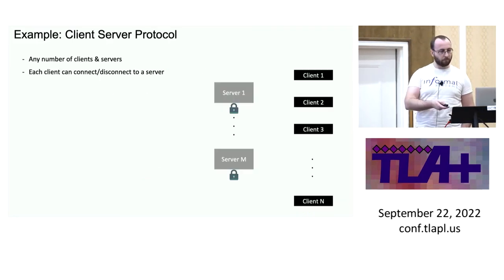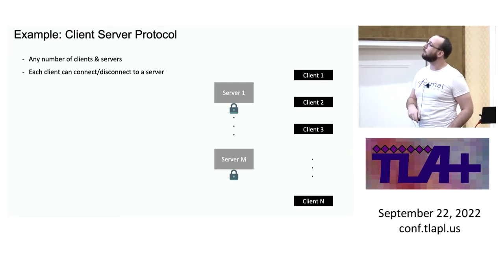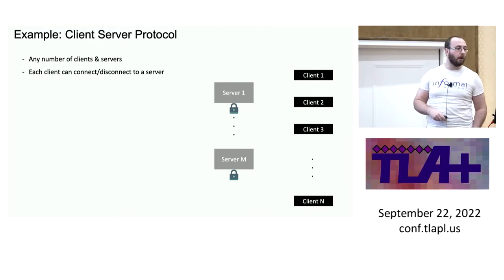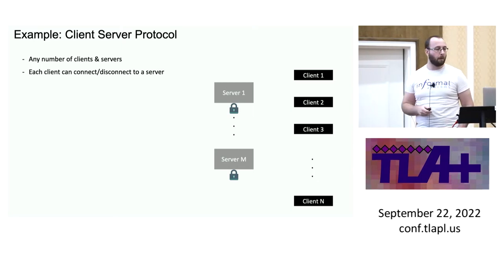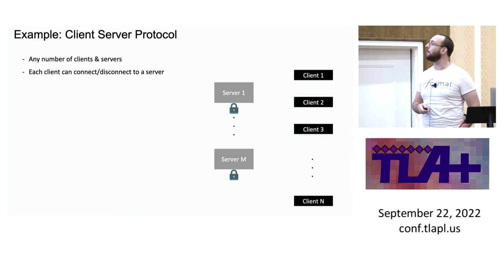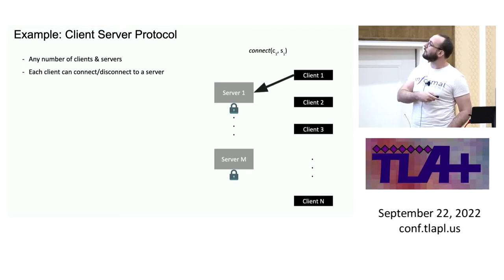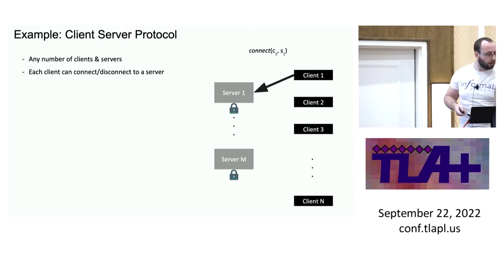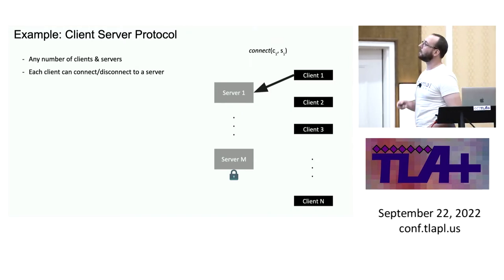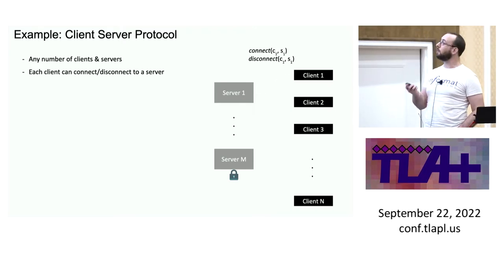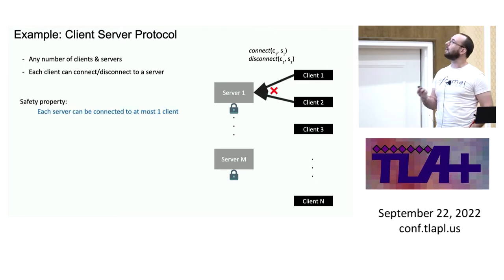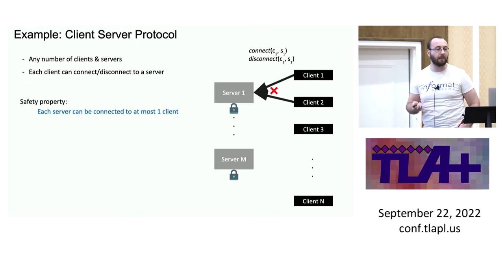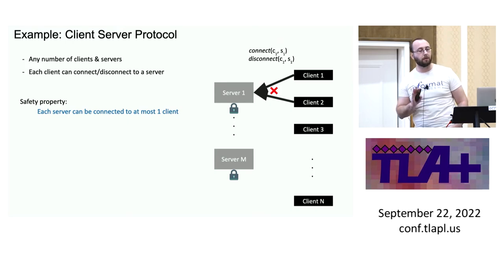Where I'm going to start is something slightly different from what you've seen before. This is an example protocol — a client-server protocol from Karem. The setting is: you have some number of clients and servers, and you're allowed at most one client per server connected. So client one expresses the desire to connect to server one, takes that lock, then at some point says 'I've had enough' and releases it, at which point client two can request it. But it cannot happen that both client one and client two simultaneously hold server one.